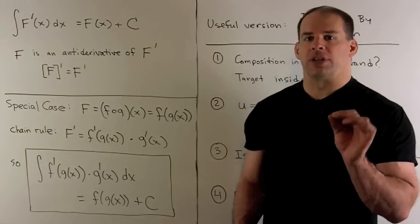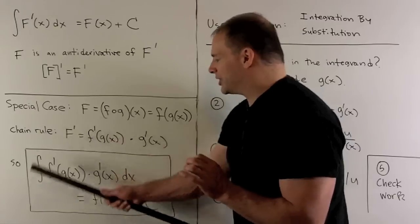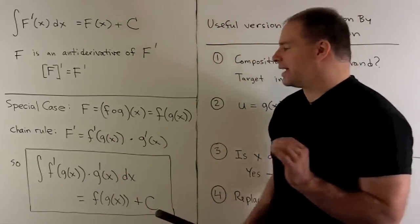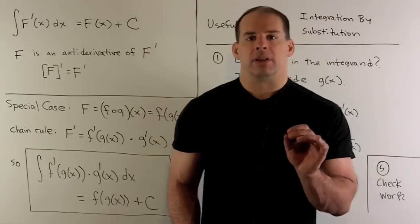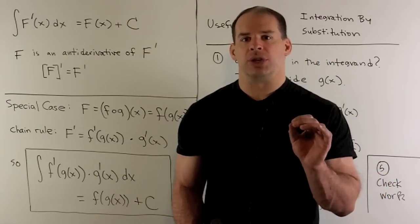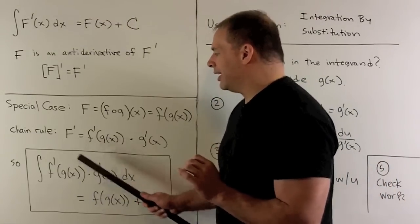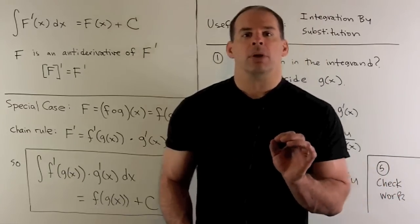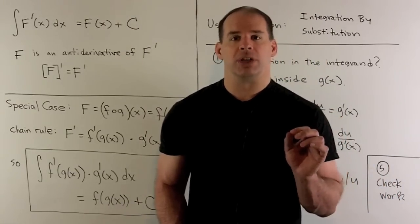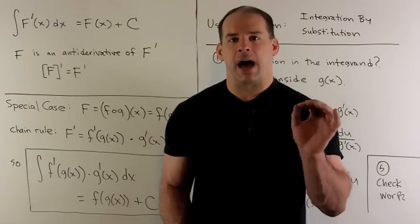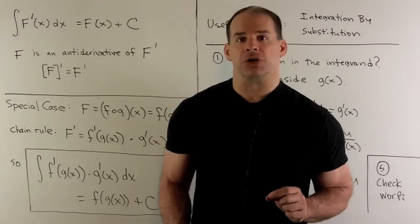If we were to actually use this business of working backwards from the chain rule using just this identity, it's a little bit forbidding, because we have to identify two derivatives right off the bat. The technique we're going to use is called integration by substitution. The idea is you cut back on your work by focusing on the inside function. On your first pass at an integral that might use integration by substitution, you have to identify a composition somewhere in the integrand, and then your first step is figuring out what the inside function is.